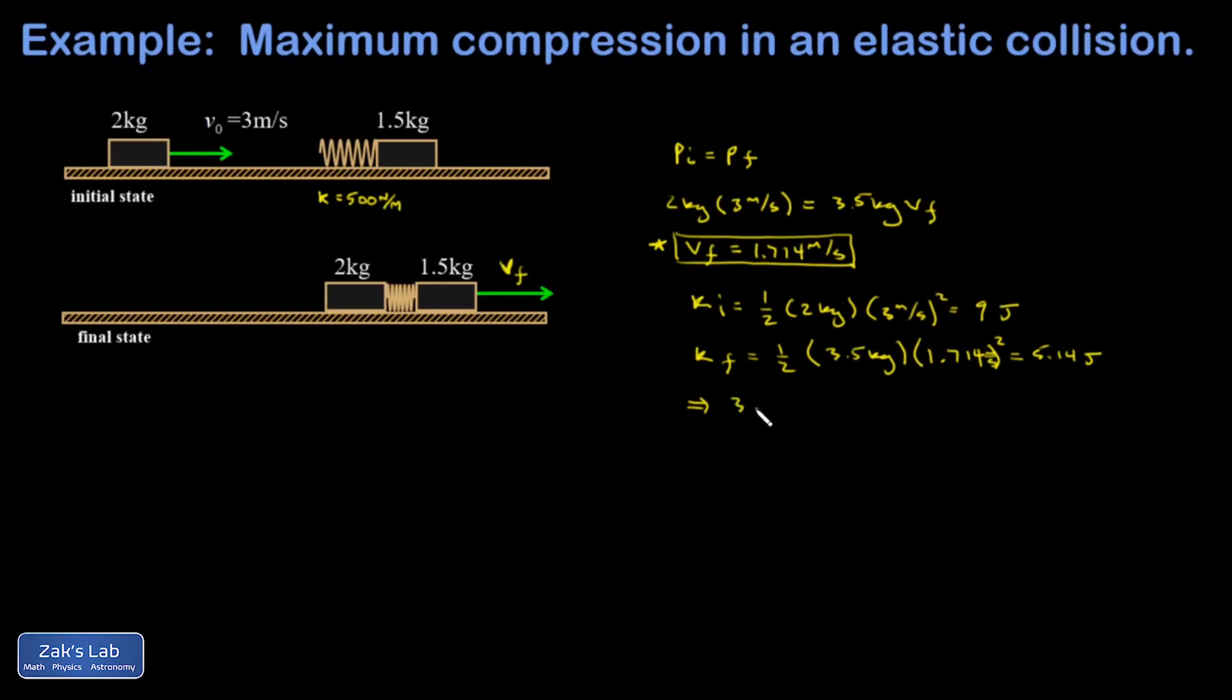Which means 3.86 joules of energy is not in the motion of the masses, but is instead stored in the compression of the spring.